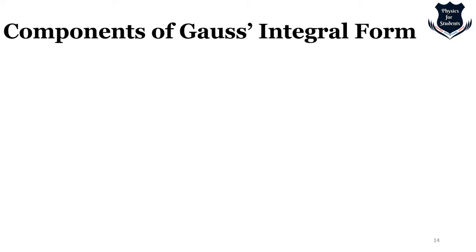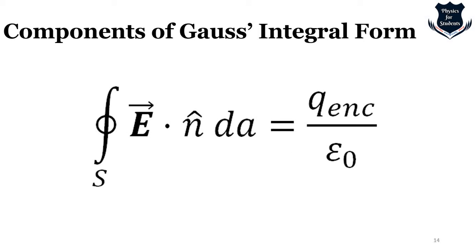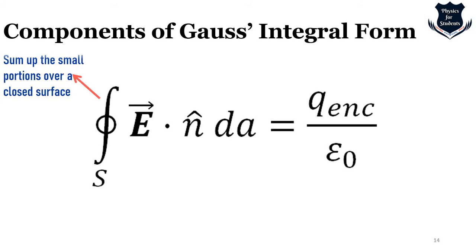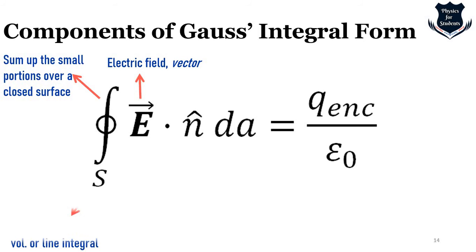Now let's examine the components of Gauss's law in integral form. The integral sign with a large S means summing up small portions over a closed surface — adding up many small elements. The arrow on E indicates it is a vector quantity — the electric field. The circle on the integral sign specifies this is an integral over a closed surface.